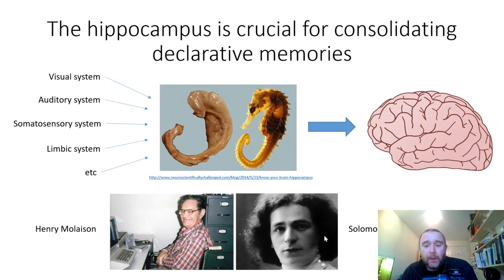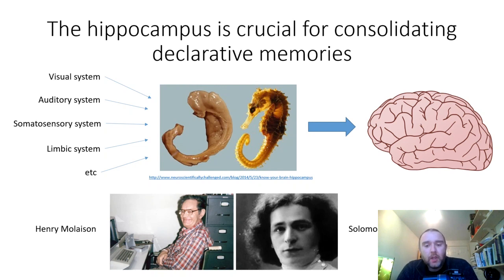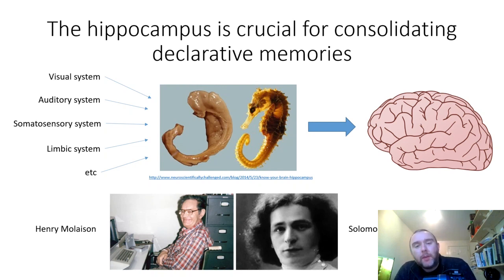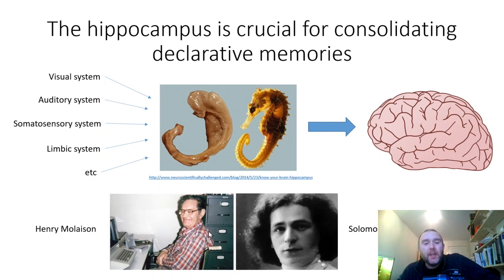On the flip side is Solomon Cheryshevsky, a Russian studied by the psychologist Salvador Luria. Cheryshevsky had a near-perfect memory and could remember virtually every detail of what had ever happened to him. For example, Luria gave him a complex mathematical expression to memorise; twenty years later, he recalled it perfectly accurately. Most of us sit somewhere between these two extremes, and it's worth reading more about both of these characters.